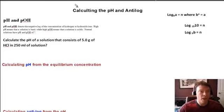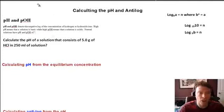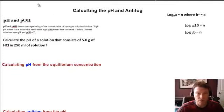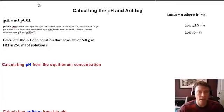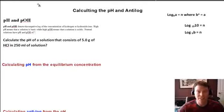pH and pOH are defined as the negative log of the concentration of the hydrogen and hydroxide ions respectively. If you have a high pH, it means you have a solution that is very basic. If you have a low pH, you have a solution that is going to be acidic.